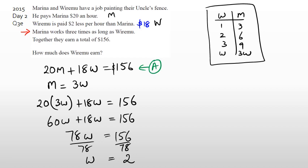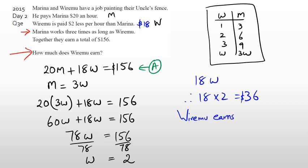Be careful — your automatic assumption might be to find M, but look at the question. It asks how much does Viramu earn? So Viramu earns 18W, which is 18 times 2 equals $36. Viramu earns $36, and you're done.